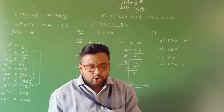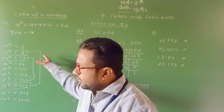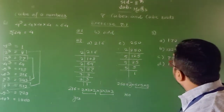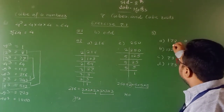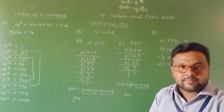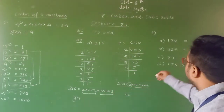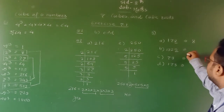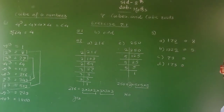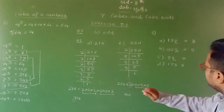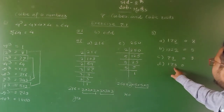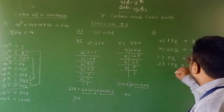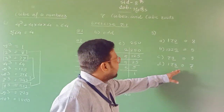Now the third question: find the unit digit of the cube of the given number. We already discussed this in the properties. For 172, the number ends in 2, so its cube ends in 8. For 1325, the unit place is 5, so its cube ends in 5. Similarly, for 9, the cube ends in 9. For 173, the unit place is 3, so it ends in 7. And for a number ending in 7, the cube ends in 3. These are the answers for this question.